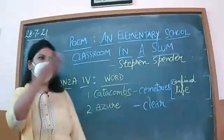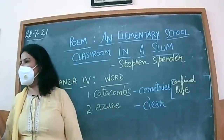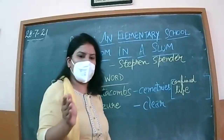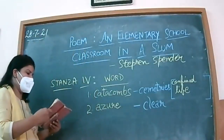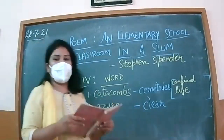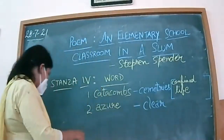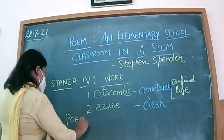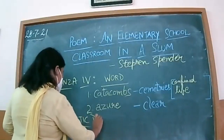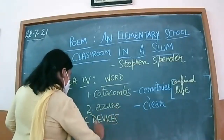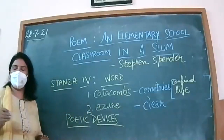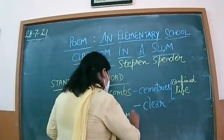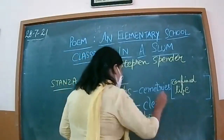Any doubt about any word or expression? All clear. Let me tell you, there are two poetic devices used in this last stanza. The first one is metaphor — I already told you: white and green. What is a metaphor? It is used to make a direct comparison.